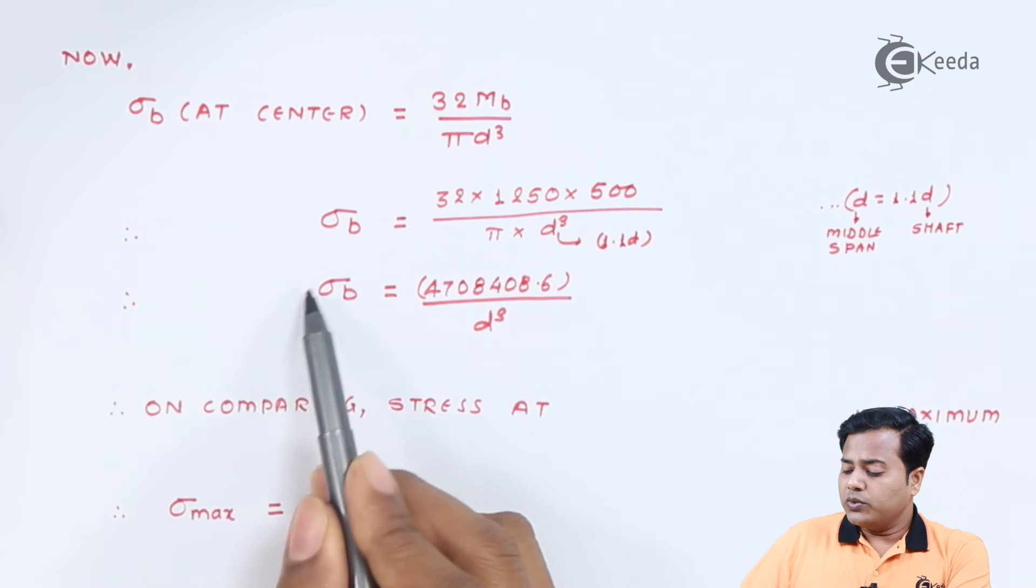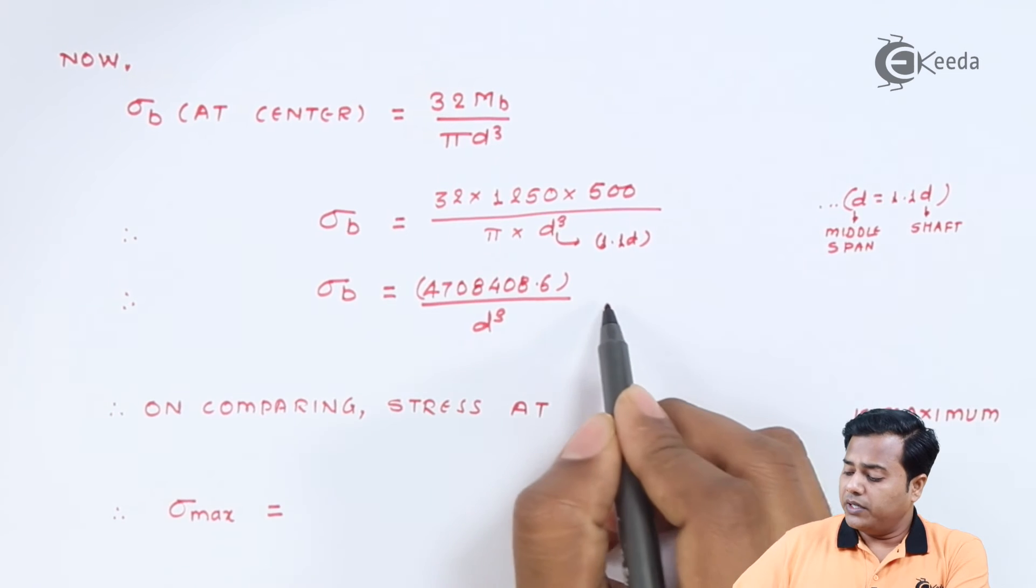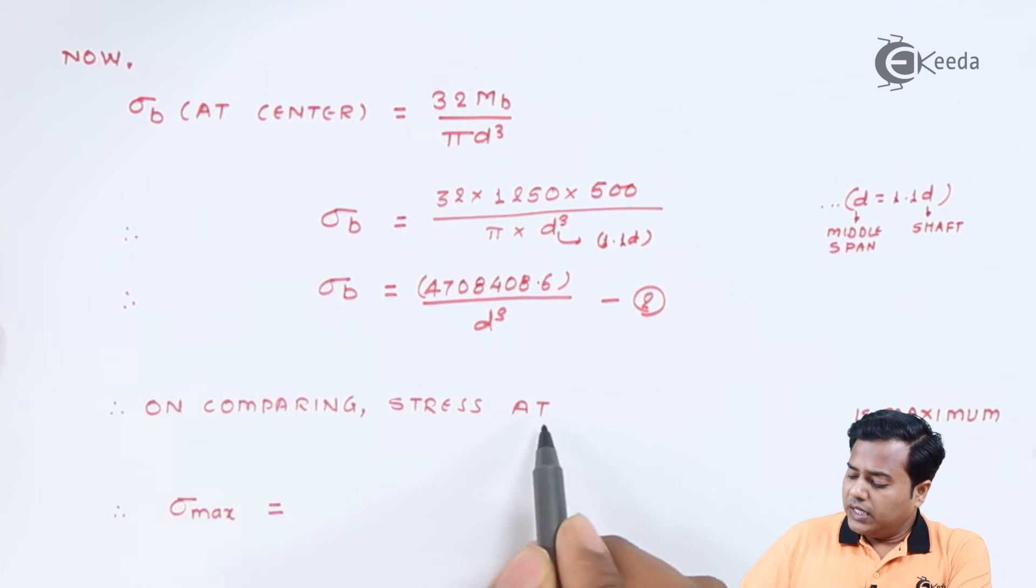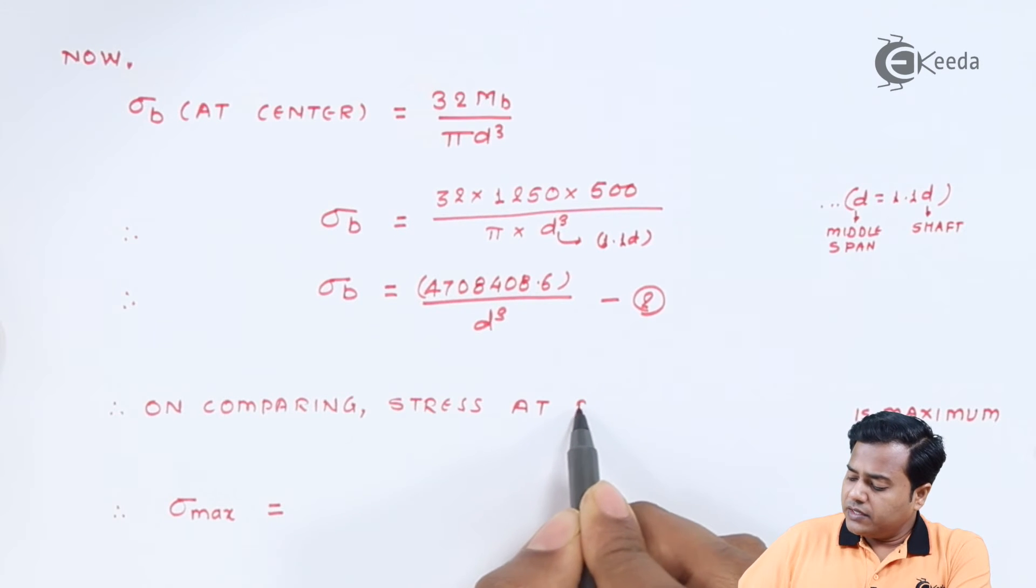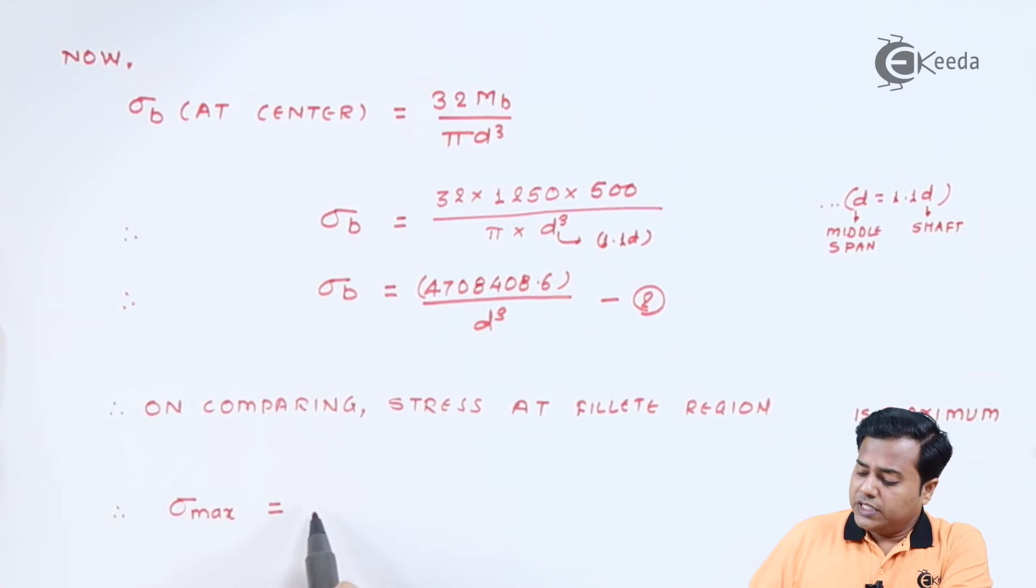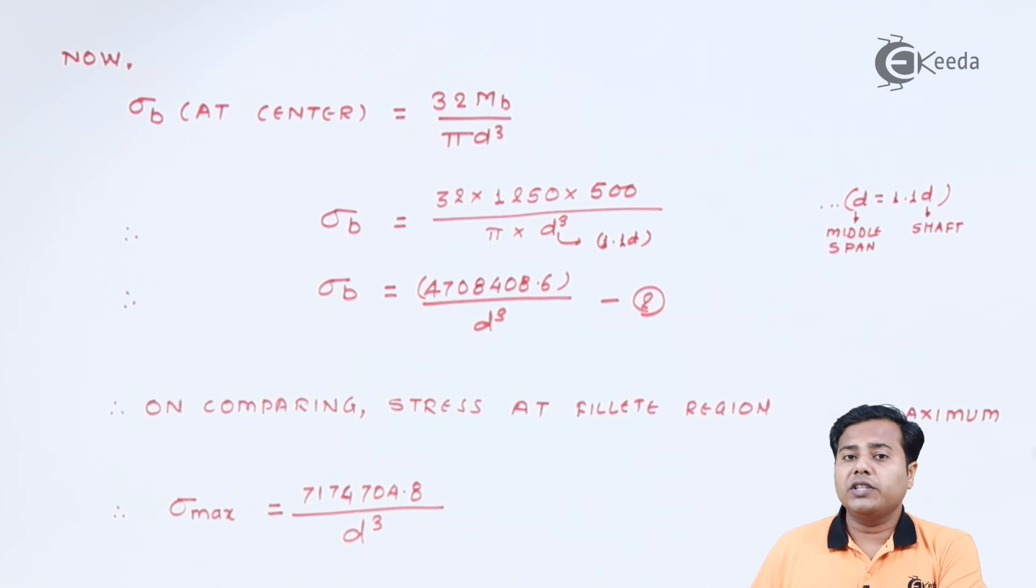Now there is no stress concentration that's happening at this center. It's just because the area of cross section is changing we are considering this region. That's why on comparing equation number 1 and 2 or the expressions 1 and 2, it is very clear that the stress that is occurring in the fillet region is maximum and therefore on comparing stress at fillet region is maximum and therefore sigma max as we have calculated it is which is the final expression that we have obtained.